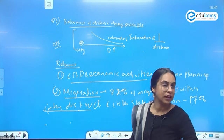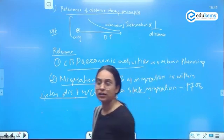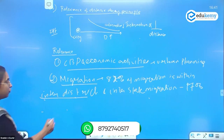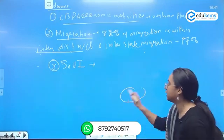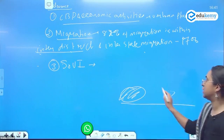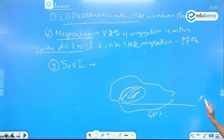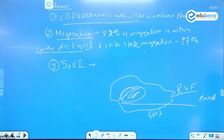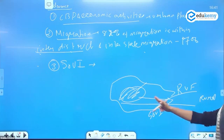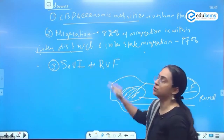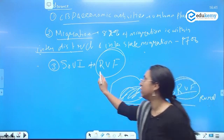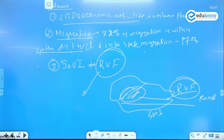So it is important to plan for CBD and economic activities. It is also important to plan for the sphere of urban influence using the distance decay principle — for knowing the sphere of urban influence. Once you know the sphere of urban influence, I know this is my city, this is the sphere of urban influence, this is the rural region. I can plan for my rural-urban fringe, and while planning for the rural-urban fringe, I can stop one of the most unmanageable urban developments — urban sprawl — to manage urban sprawl.